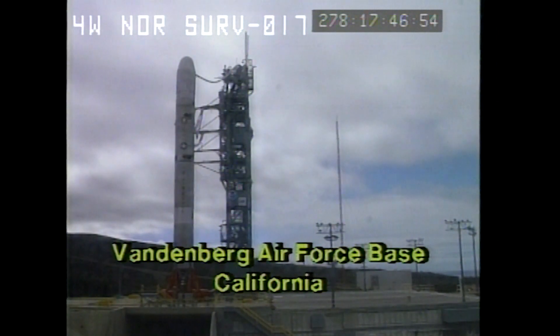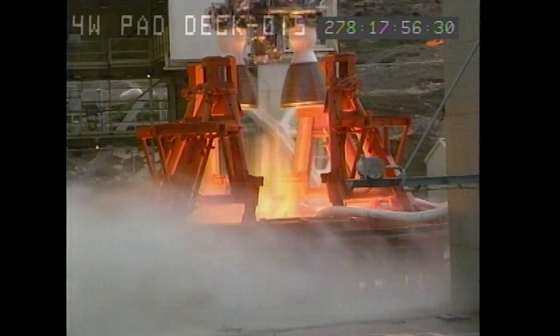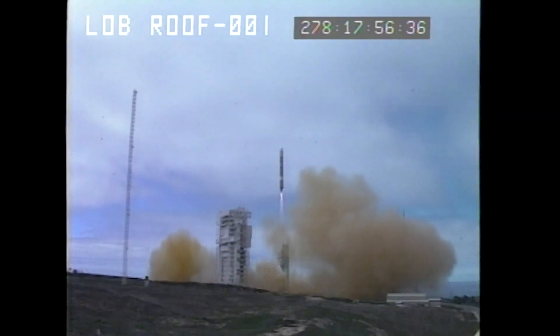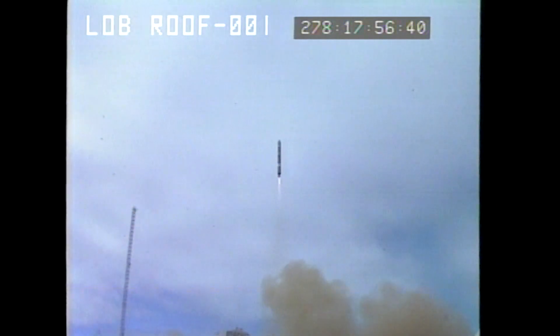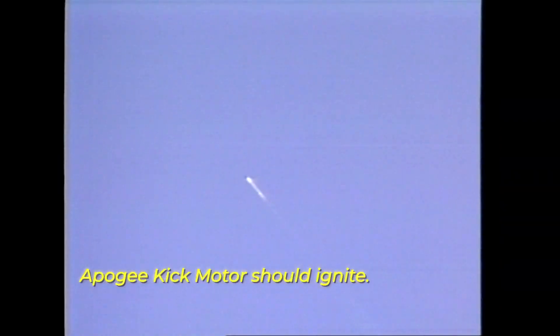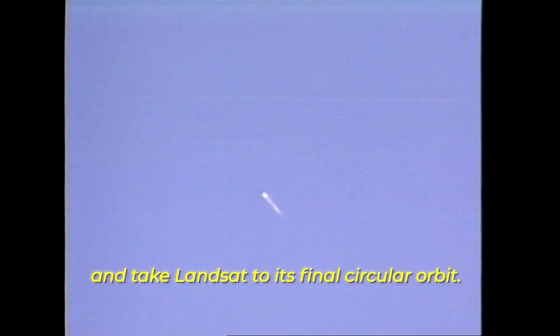Fire engine, liftoff. Time 1756. We have liftoff. Landsat 6 launched on October 5, 1993. Apogee kick motor should ignite right now and take Landsat to its final circular orbit. But it never made it to orbit.